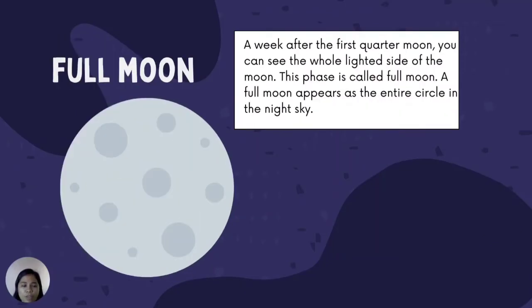Full Moon: A week after the first quarter moon, you can see the fully lighted side of the moon. This phase is called full moon. A full moon appears as the entire circle in the night sky.